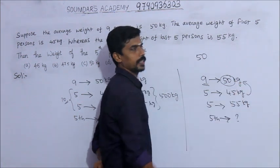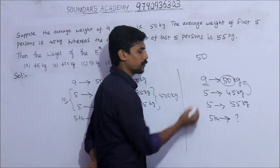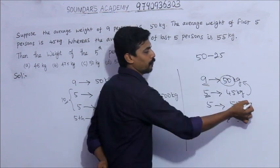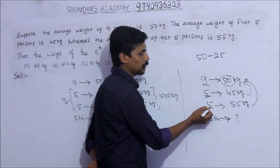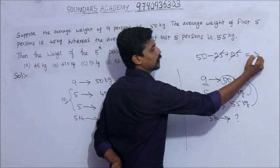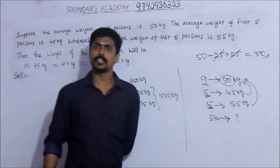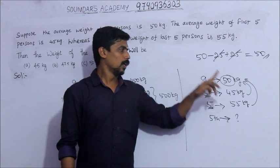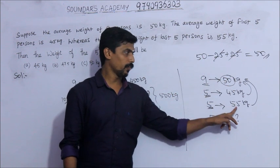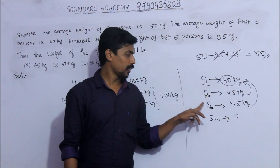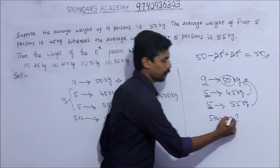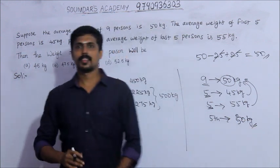We can also verify: 45 minus 50 equals minus 5, and minus 5 times 5 equals minus 25. Then 55 minus 50 equals 5, and 5 times 5 equals plus 25. The answer is minus 25 plus 25 equals zero, confirming the weight of the 5th person is 50 kg. Thank you.